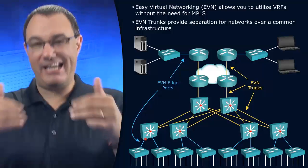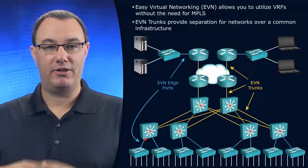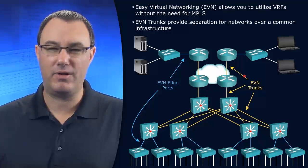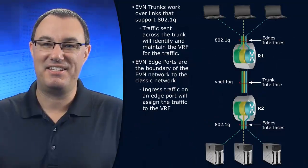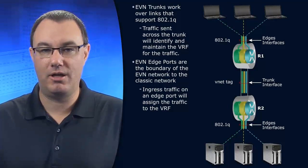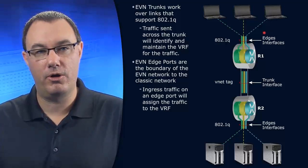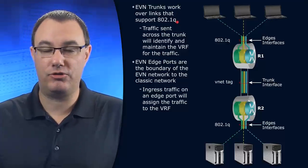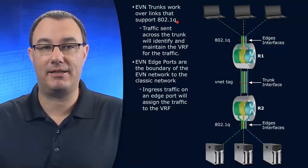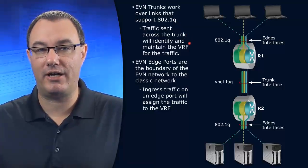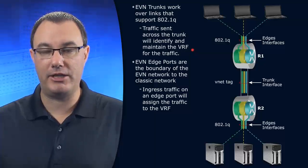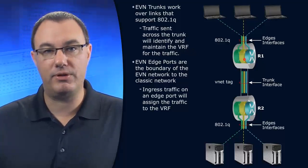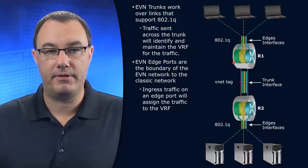We have our edge ports, which are the ingress into the EVN network. The EVN network is a collection of these yellow links that we can see here. For a deeper look — still conceptual — we have our EVN trunks, which need to support 802.1q, so they need to be something like Ethernet. The traffic sent across the trunk will identify the virtual routing and forwarding information, which is a set of routing planes. You can see here we have routers within routers.